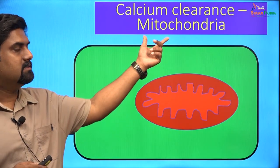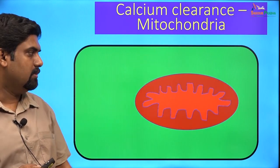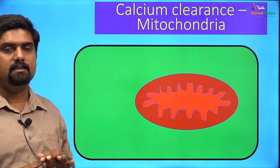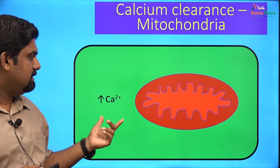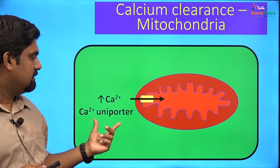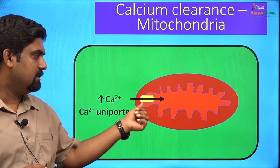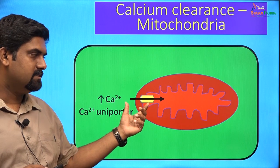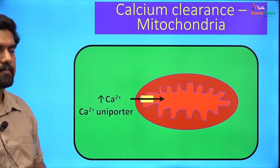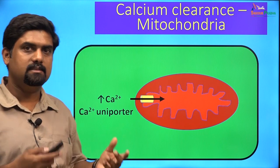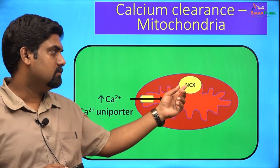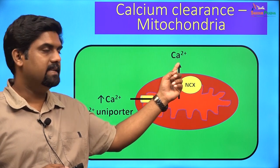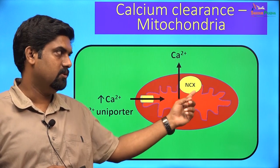Another important calcium clearance mechanism is the mitochondria. The mitochondrial calcium uniporter, present on the inner mitochondrial membrane, can take up calcium from the cytoplasm into the mitochondria. Mitochondria can also act as a source of calcium through an NCX present on the inner mitochondrial membrane, which releases calcium into the cytoplasm in exchange for sodium.